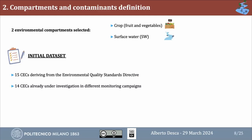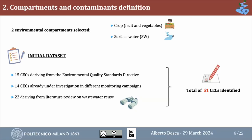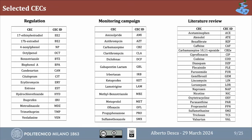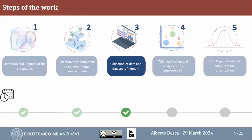For the second phase, we selected two compartments of interest: crops (more relevant for human risk) and surface water (more relevant for environmental risk). We started from an initial dataset of contaminants of emerging concern composed of 15 molecules from the Environmental Quality Standard Directive, 14 already under investigation in monitoring campaigns, and 22 from a literature review focused on wastewater use — giving a list of 51 molecules. These are divided into different classes including phenols, hormones, and antibiotics.